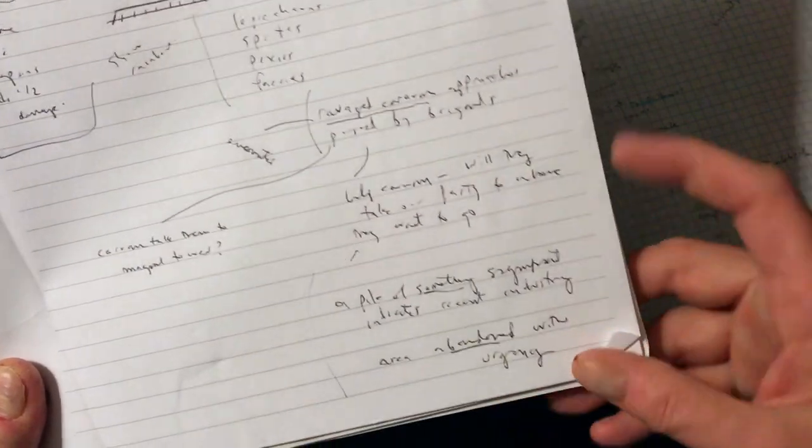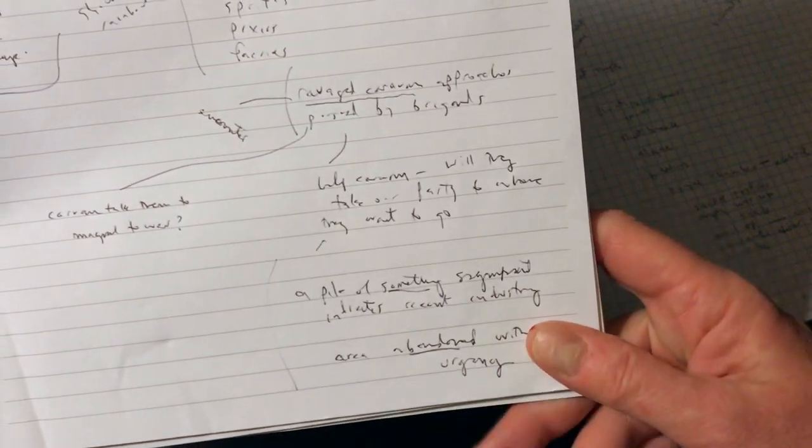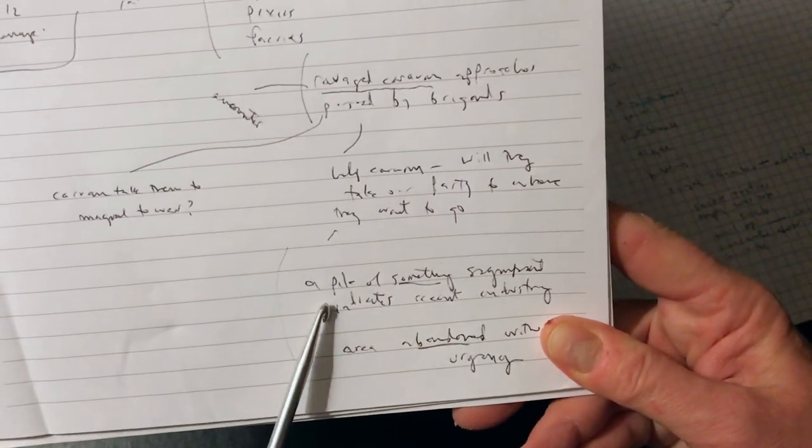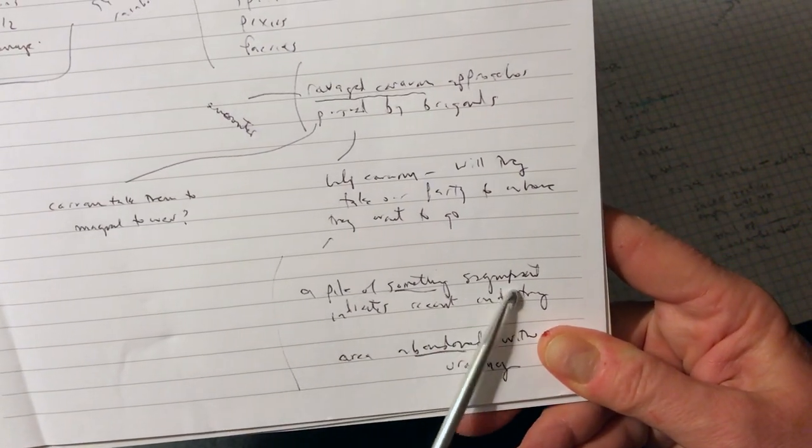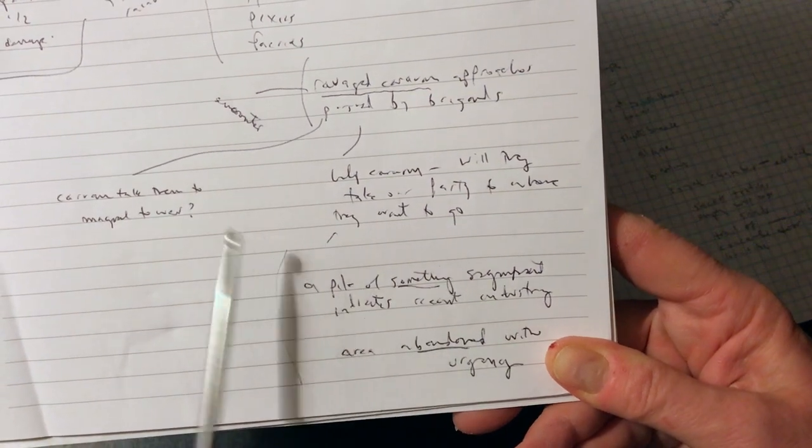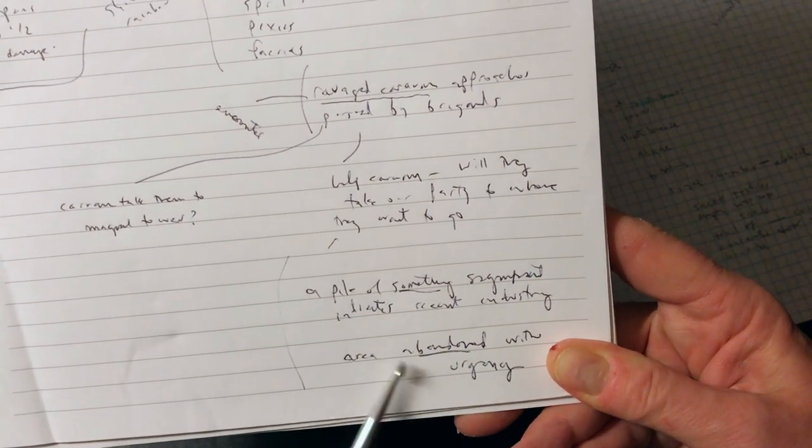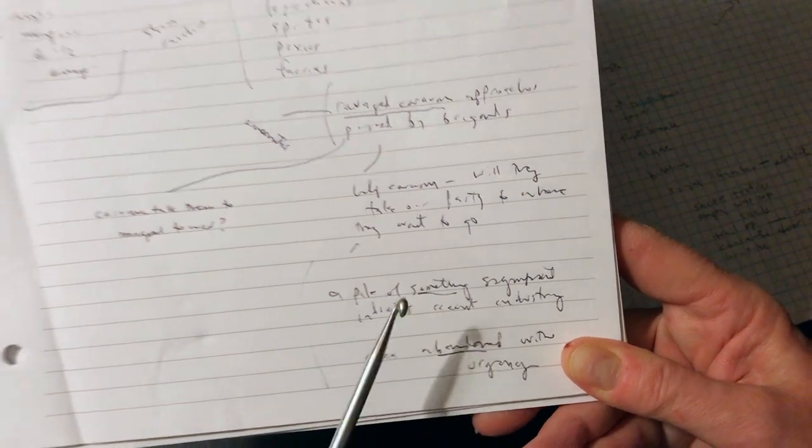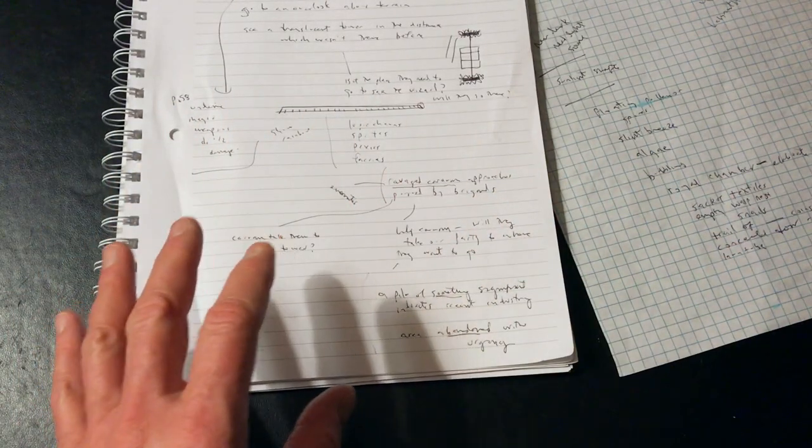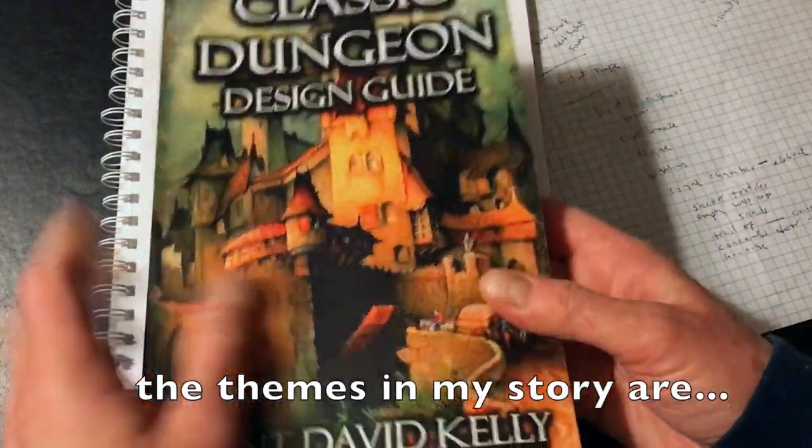Well, we're going to help them. Are they going to take over us? And then toward the end we rolled on these two concepts of seeing a pile of something that indicates there was recent industry or building there, and finally an area that was abandoned with urgency.